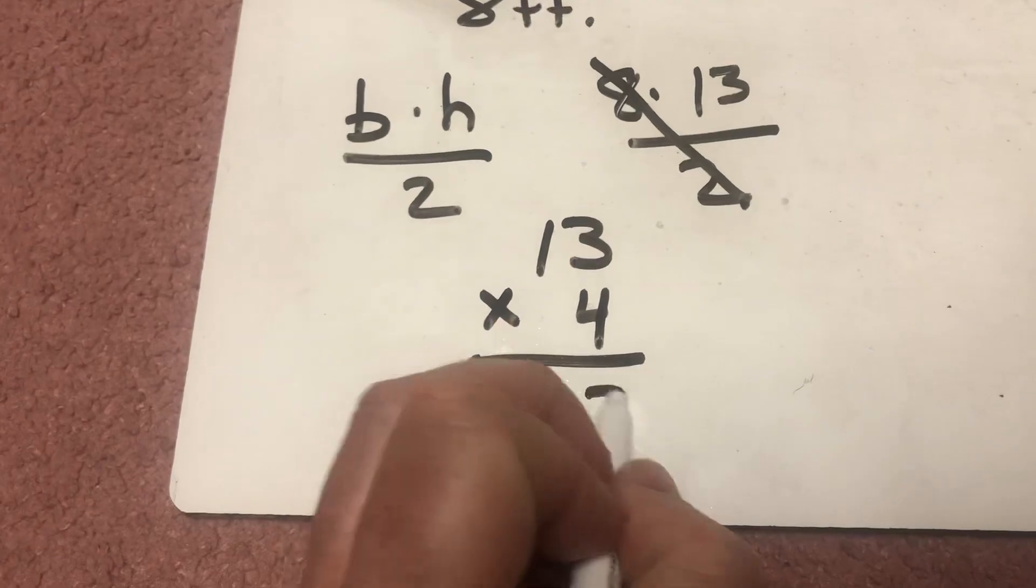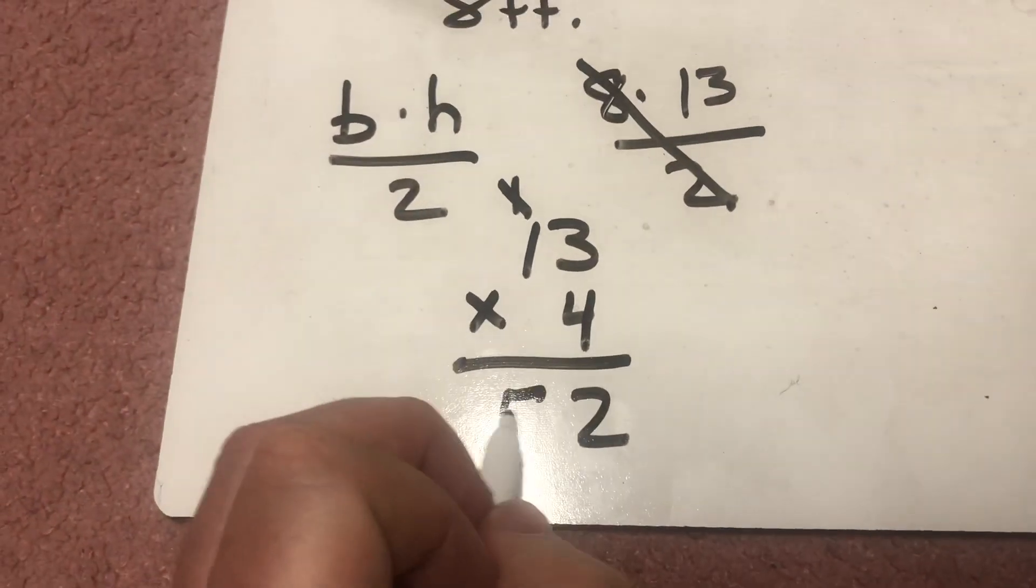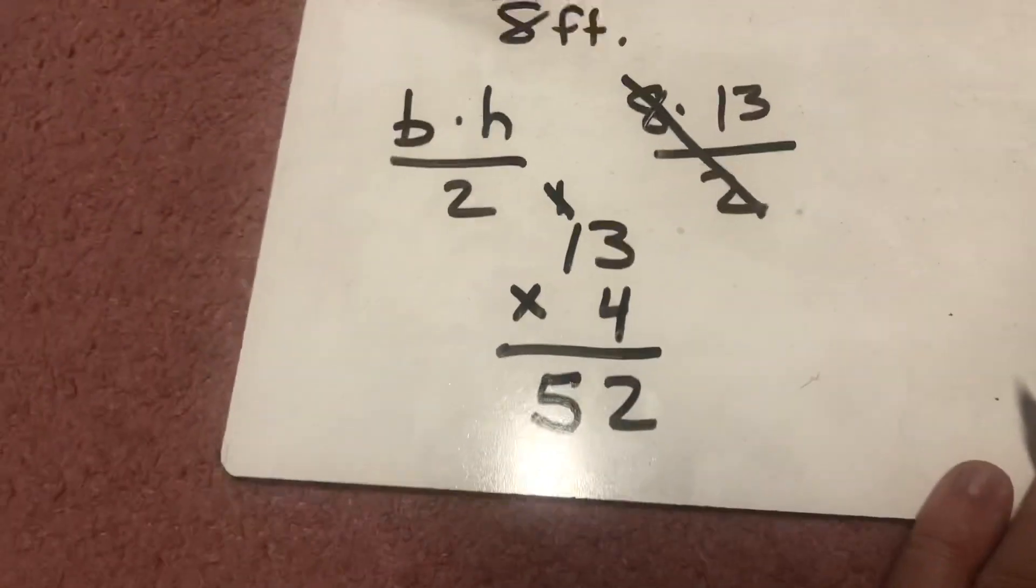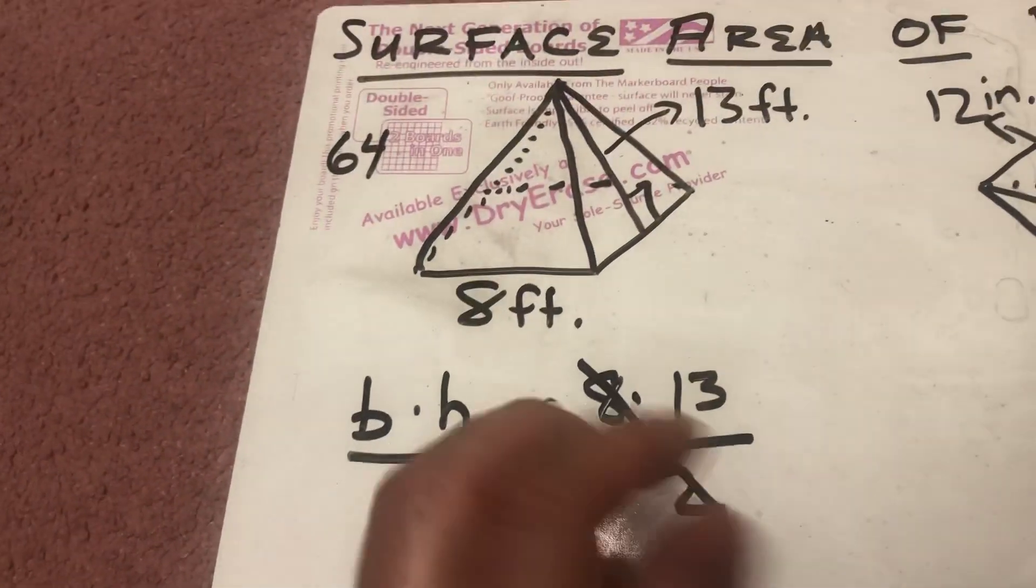4 times 3 is 12. Put the 2 down, carry the 1. 4 times 1 is 4, plus 1 is 5, and I get 52. One of the triangles has an area of 52 square feet.